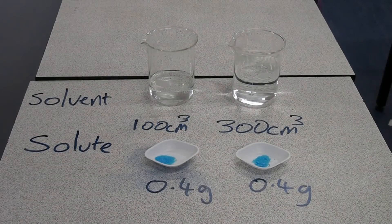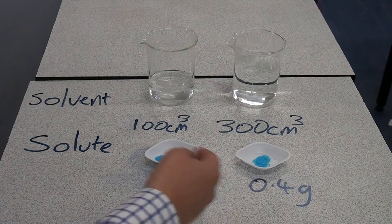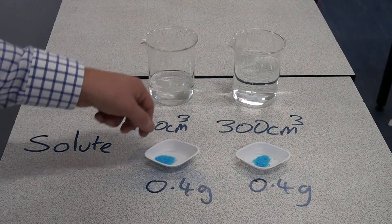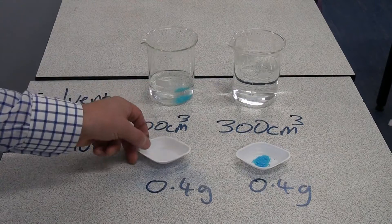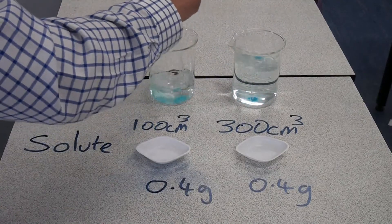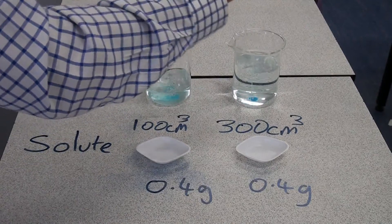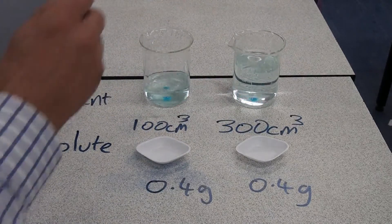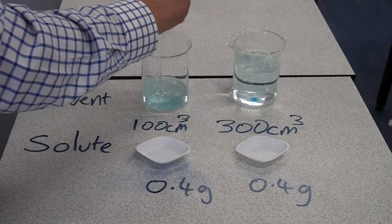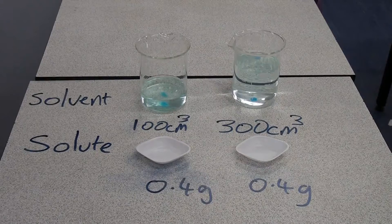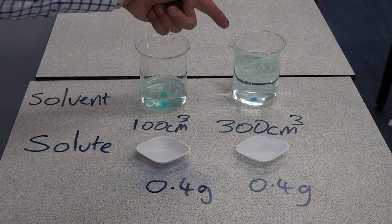This time we're going to keep the mass of solute the same — in each case we've got 0.4 grams of copper sulfate — but we're going to change the volume of the solvent. In this beaker I've got 100 cm cubed of water, and in this beaker I've got 300 cm cubed. We can see that the concentration of the one with less solvent is greater, shown by the slightly darker colour, and that one is less concentrated.